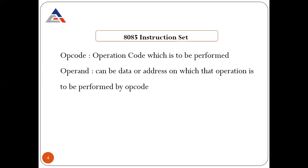The operand is a data value or address on which the operation is to be performed by the op code. For example, the instruction 'ADD B' means you need a minimum of two operands — one is automatically the accumulator, and the other is register B. The contents of the accumulator will be added with the contents of register B and the result will be stored in the accumulator.